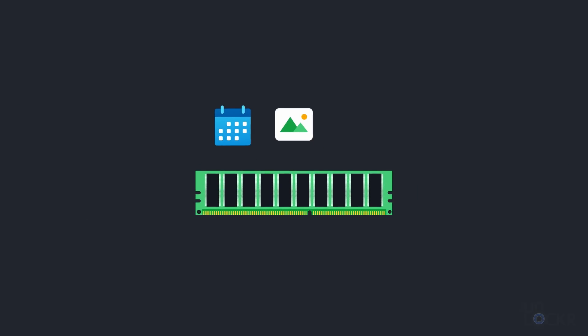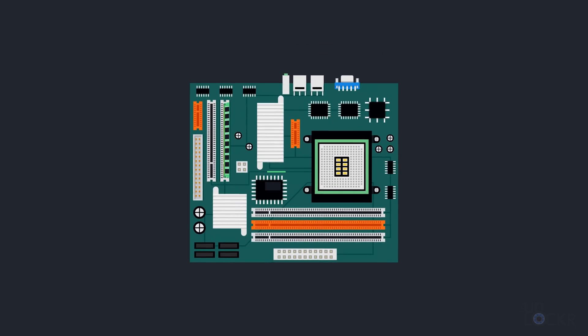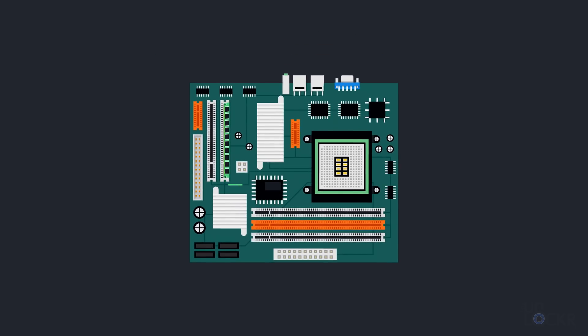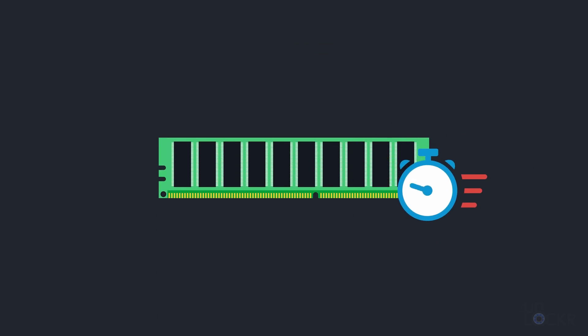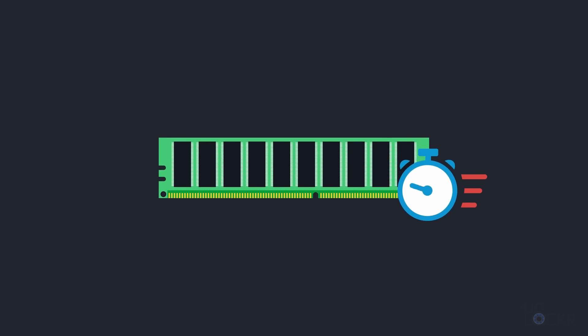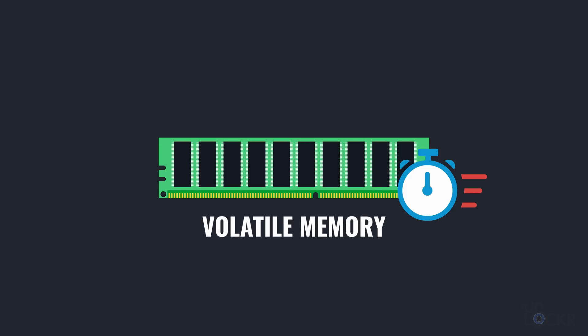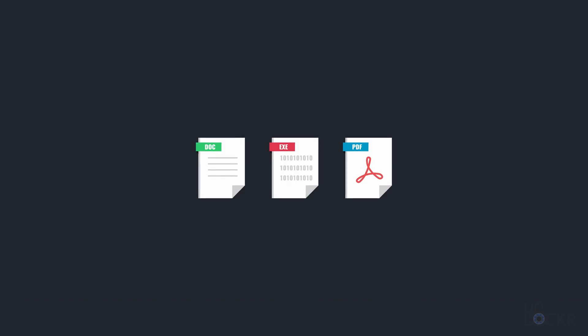Regardless, RAM is what it's called now. And it is used to store any program, the operating system, and data in use right now, allowing it to be reached by the computer's processor easily. RAM is much faster than the normal storage in your device, but it is what's called volatile memory. That means that all the data stored there is erased any time your device or phone is turned off.